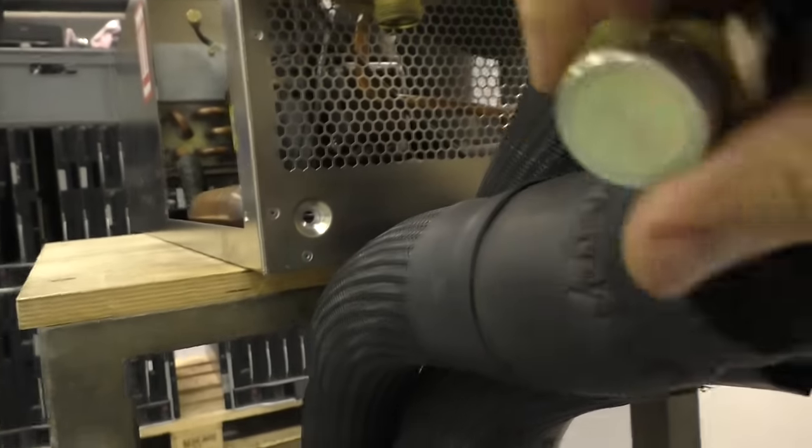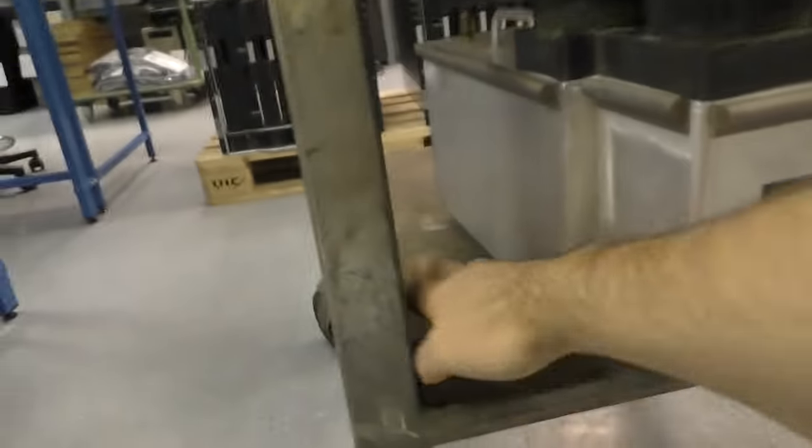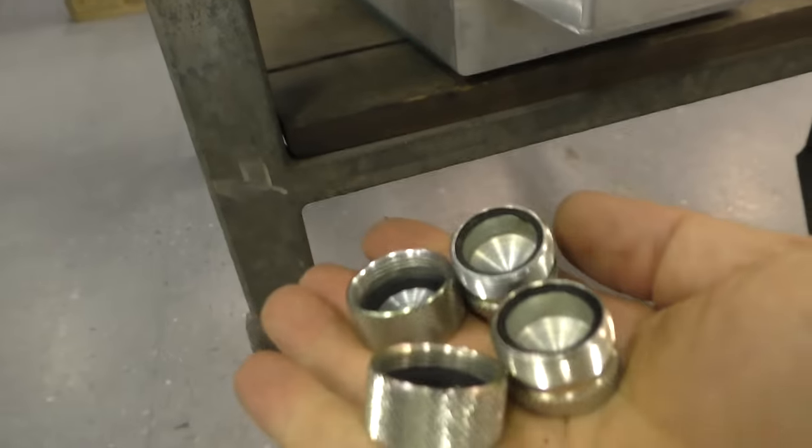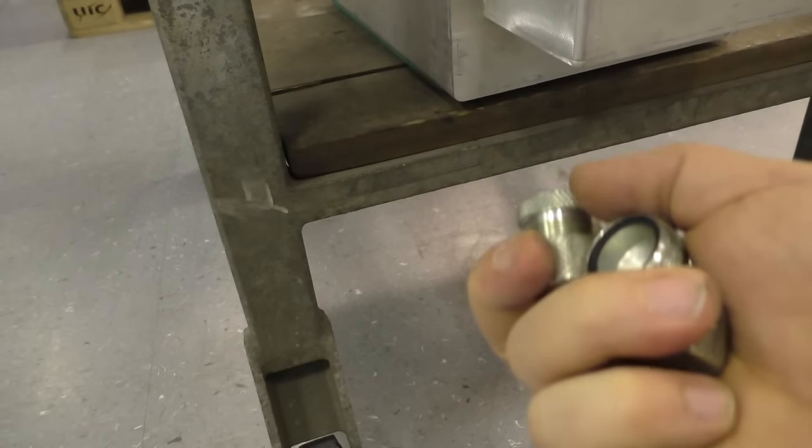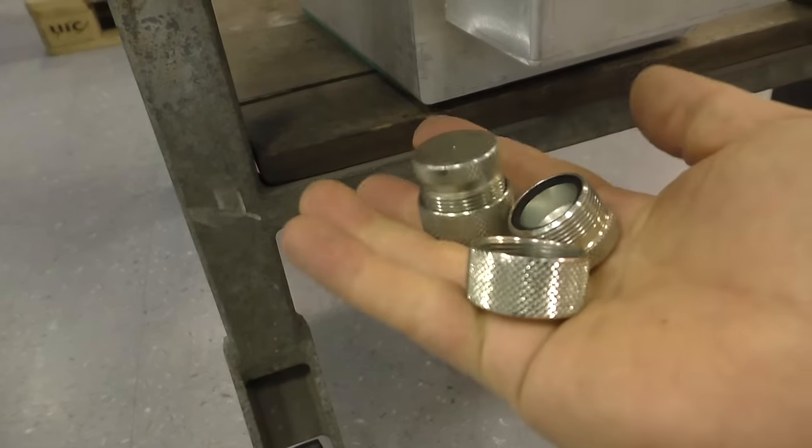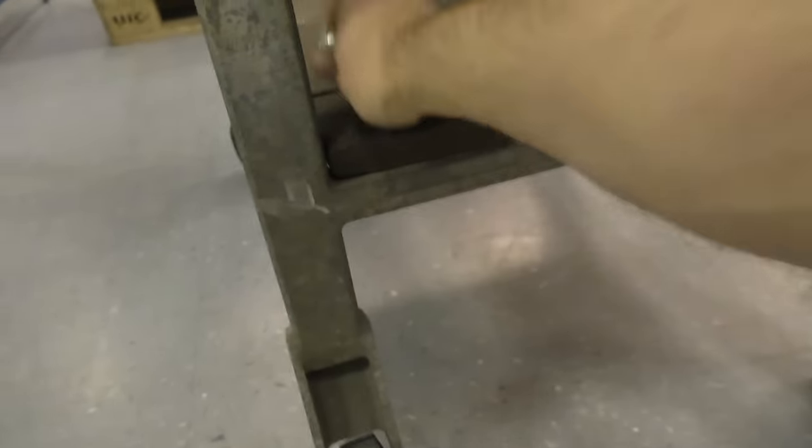Then we have these protection caps here for storage. Which make nice containers for, for example, for grease. You can screw them together. A small container for something.